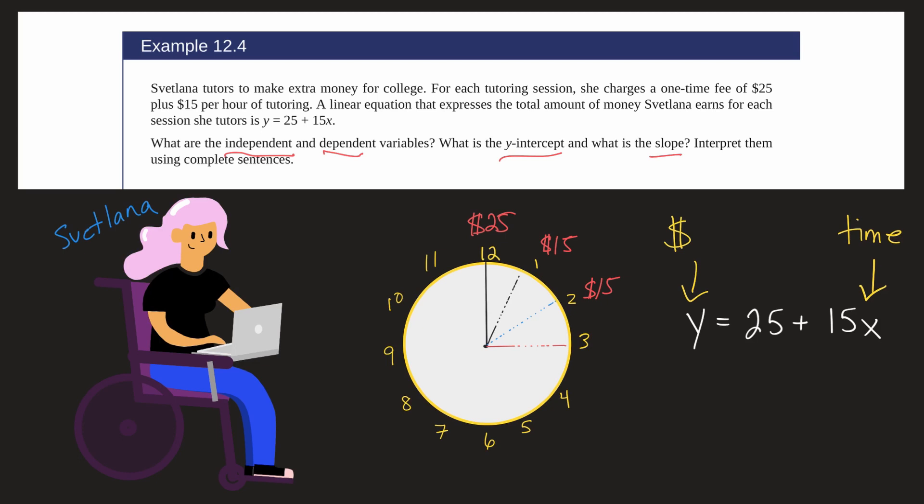Next, it asks us, what is the y-intercept? Well, remember the y-intercept is where x equals zero. So all we have to do here is substitute zero in where x is. So y equals 25 plus 15x, which in this case is zero.